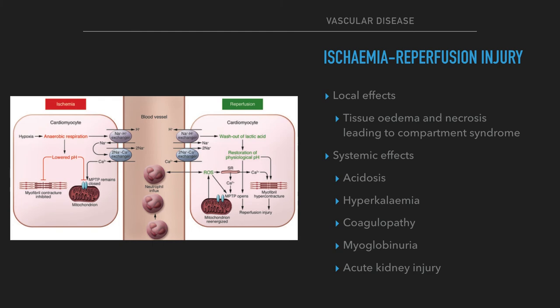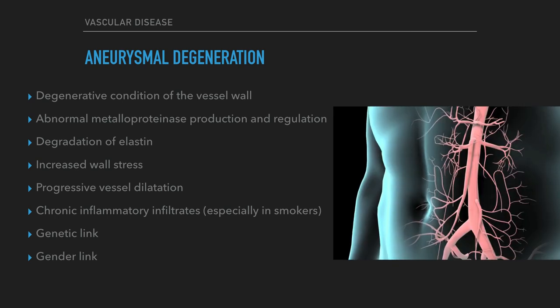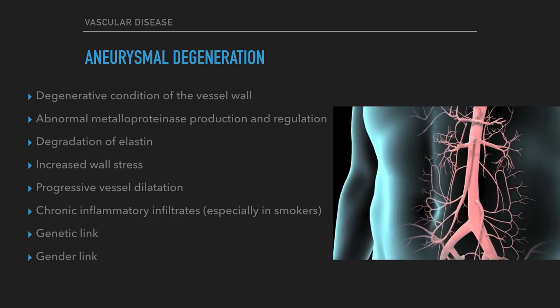Local effects include tissue edema and necrosis leading to compartment syndrome, further potentiating the ischemia. Systemic effects include acidosis and hyperkalemia, due to the release of accumulated acid moieties and intracellular potassium respectively; coagulopathy, due to prothrombotic necrotic tissue; and myoglobinuria due to rhabdomyolysis, resulting in increased myoglobin and creatine kinase, leading to acute kidney injury.